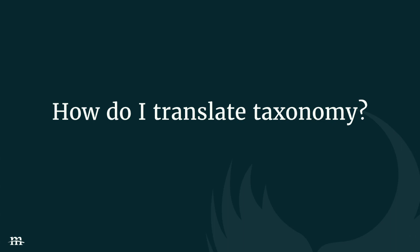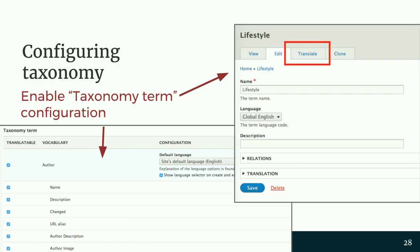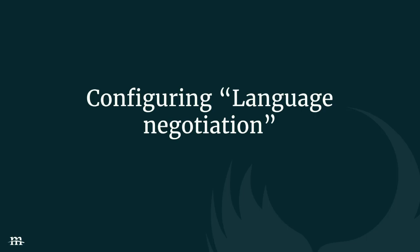What about translating taxonomy? Same kind of deal. Go back to the content configuration screen, turn on taxonomy terms, select whatever fields you want translated, and now you have a translate tab.